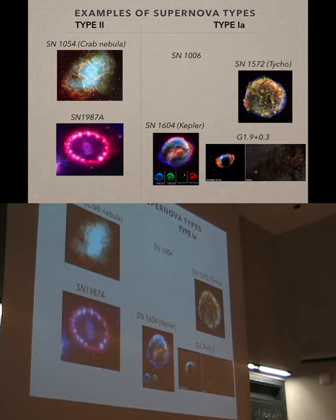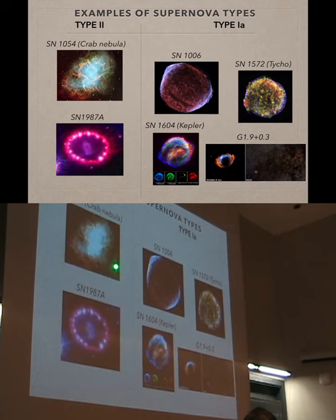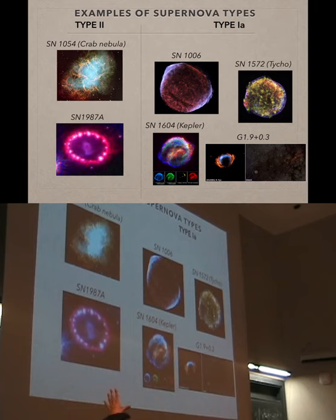Both the filamentary remnants are produced by single massive stars that exploded, while these rounder supernova remnants are produced by Type Ia supernovae — white dwarfs that explode. Someone asks whether the small white dots outside the supernovae are illuminated by it. Those are background stars in our galaxy that just happen to be in the same field of view. They're not necessarily at the same distance, and most of them are not illuminated by the supernova because they're really far away.